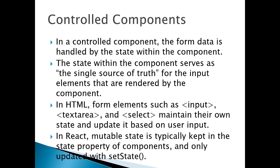In a controlled component, the form data is handled by the state within the component. The state within the component serves as a single source of truth for the input elements generated by the component. In HTML, form elements such as input, textarea, and select maintain their own state and update it based on user input. With every key stroke by the user, the state information will be updated automatically. In React, mutable state is typically kept in the state property of a component and only updates with setState. Whenever a user types something into the box, the value of the state will update automatically accordingly.